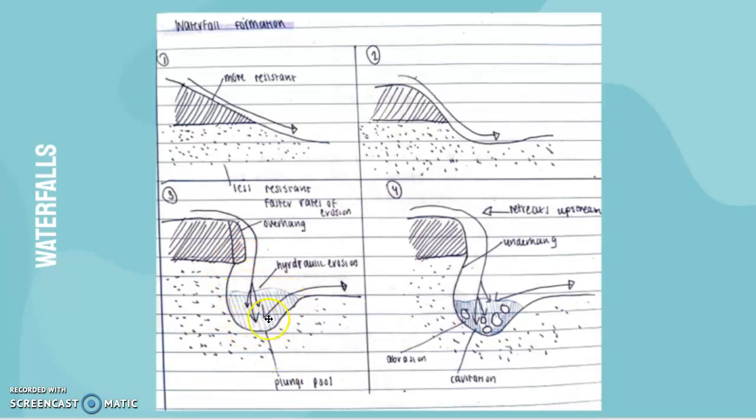This has eroded so much to the point where it's formed a plunge pool. It keeps eroding, then this starts to cave in, and the more resistant hard rock starts to jut out. This is called the overhang. Here we have abrasion, hydraulic erosion, deepening the plunge pool even more.